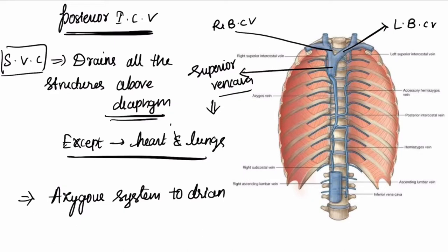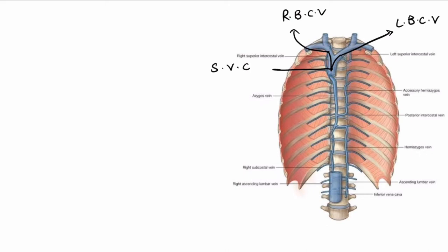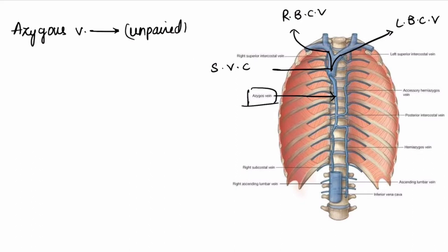We have the azygous system to drain the posterior intercostal spaces. Now let us look at this azygous system in detail. As we see here, this is the right brachiocephalic vein and this is the left brachiocephalic vein. Together they combine to form the superior vena cava. We have the azygous vein — 'azygous' means unpaired, and this azygous vein is unpaired, present on the right side.